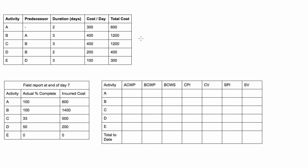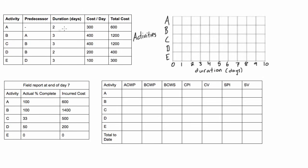In this video we're looking at a full example for earned value analysis. We'll have a table of dependencies, but in this case we're given a field report of what's actually happened in our project at the end of day seven. First of all, let's go ahead and draw our Gantt chart. Activity A is at the beginning of the project because it has no predecessor.